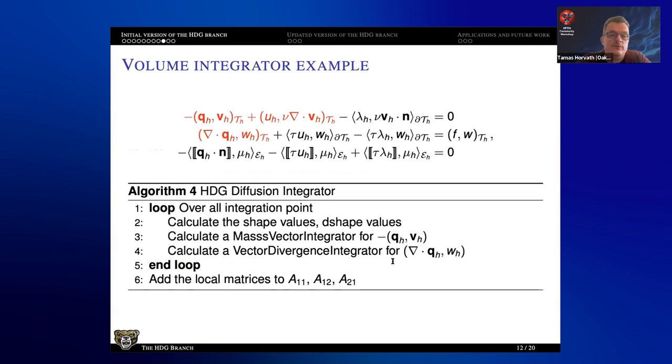So if you look at the bilinear form for the diffusion problem, there are three volume integrators that we need to calculate. And technically, actually just two because two of them are transposes of each other. So you loop over all the integration points, calculate shape values, D shape values, very standard MFEM approach. And basically, this term here is a vector mass integrator. And this term here is a vector divergence integrator. And this term here is a transpose of that. And then once you calculated those, you just put them into the three submatrices of A.